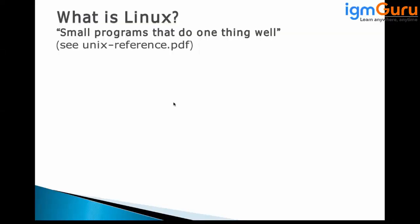One reason Linux became famous is that you can write small programs very easily to automate things, for example with a shell script. If you want to perform some automation, you can write a Unix or Linux shell script, schedule it at a particular interval, and let it run. The outcome can be an email notification, a generated file, a database report, or even restarting a server — all easily automated in Linux.